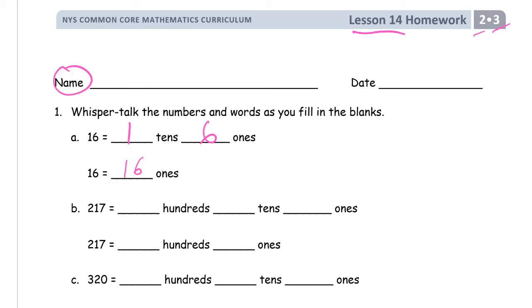217. If we can use all hundreds, tens and ones, we can use everything. We can do it with two hundreds, one ten and seven ones. If we can't use any tens, we can only use hundreds and ones, then we can use two hundreds and we'd have to use 17 ones to make it.